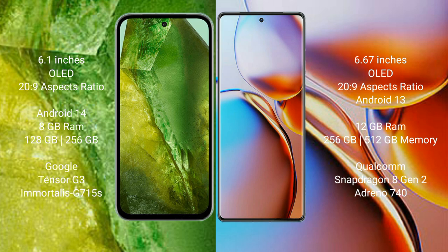Google Pixel 8a runs on the Android 14 operating system. Motorola Edge 40 Pro runs on the Android 13 operating system. Google Pixel 8a comes with 8GB RAM and 128GB to 256GB internal storage, a Google Tensor G3 processor, and GPU G715A.